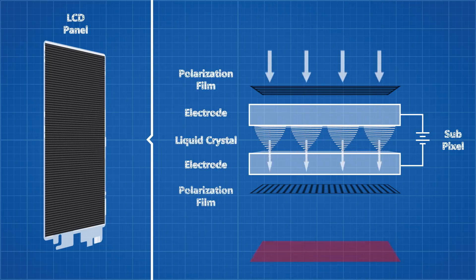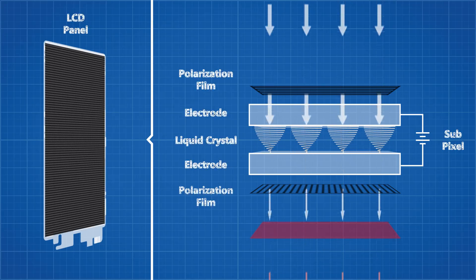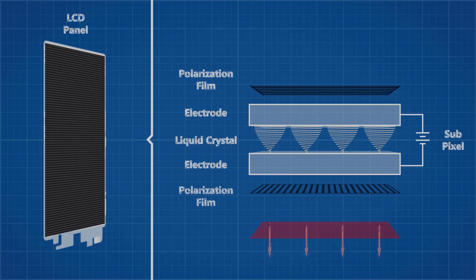If light is allowed to pass, it will travel through a coloured filter, giving it one of three colours — red, blue or green. This structure is called a sub-pixel. Combine three sub-pixels with red, green and blue filters, and you have a single traditional RGB liquid crystal pixel.